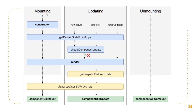In the mounting stage, you have the constructor method where your state is initialized and props are given to the component, which we discussed in the previous videos. Then the getDerivedStateFromProps method is called. This was not available earlier — earlier we had componentWillMount, but that has been removed. Now you have getDerivedStateFromProps available. It's important to note that this is a static method, which means 'this' will not be available inside of this method.